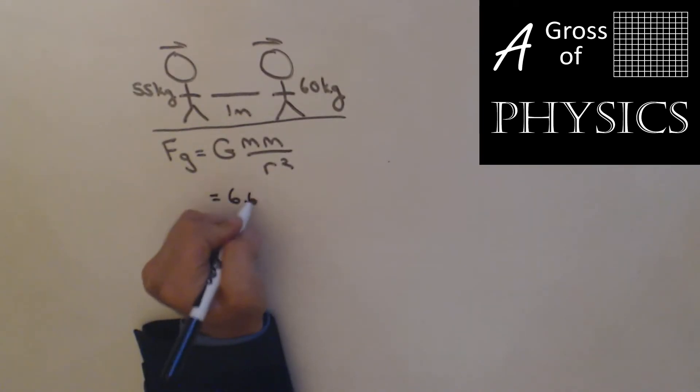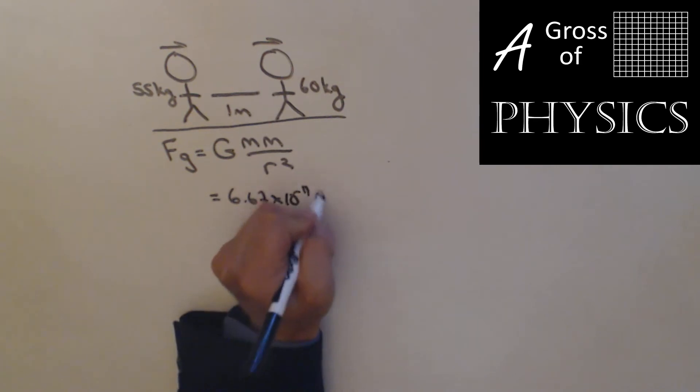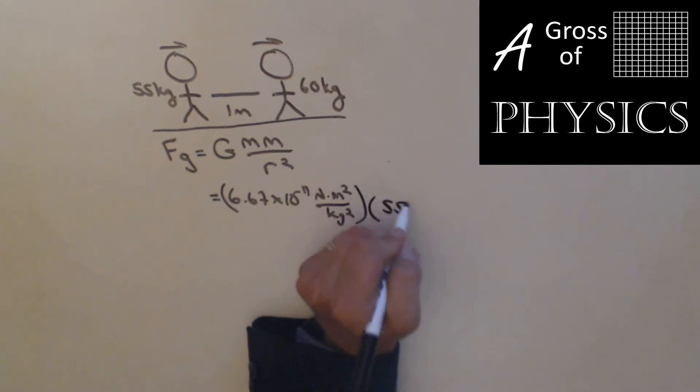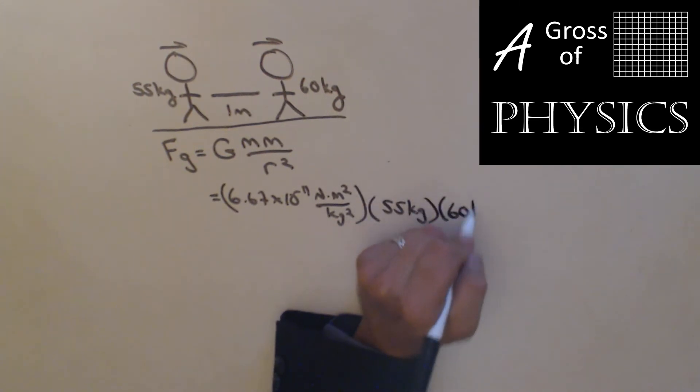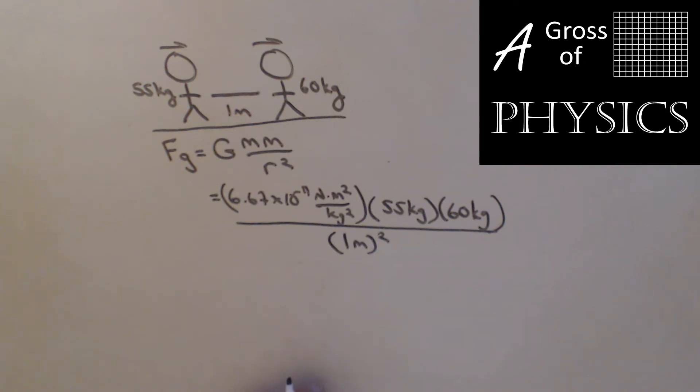Fg, the force of gravitational attraction, is big G m m over r squared. Well big G is 6.67 times 10 to the negative 11 Newton meters squared over kilograms squared. The mass is 55 and the mass is 60. We divide all of that by 1 meter squared. Now you do 6.67 EE negative 11 times 55 times 60, and then you divide that by 1 squared.